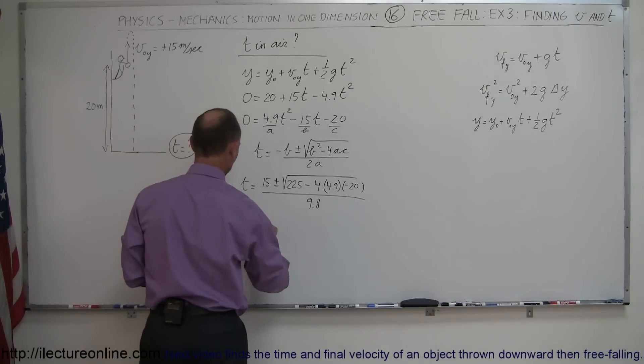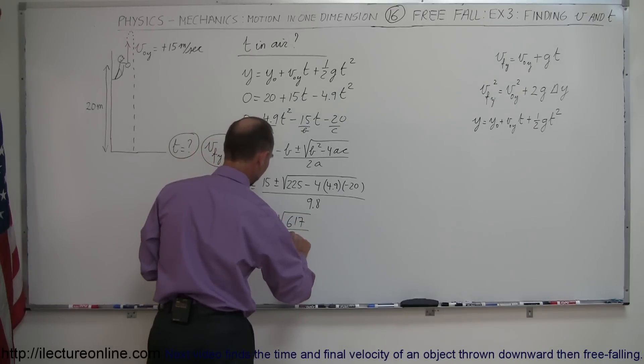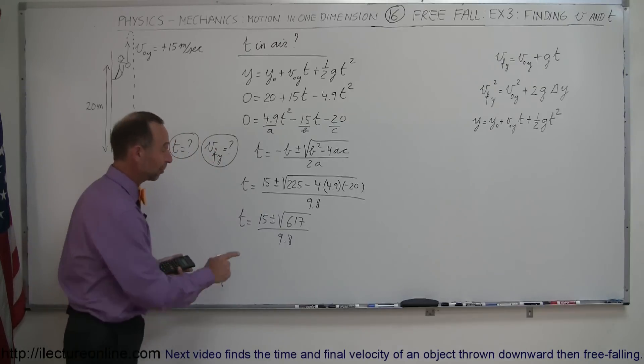Let me write the intermediate answer down, so this is 15 plus or minus the square root of 617 divided by 9.8, and notice this is plus or minus.